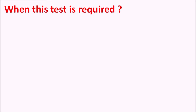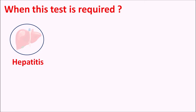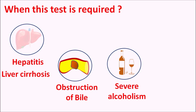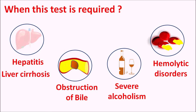Apart from jaundice, bilirubin levels can also be elevated in liver disorders such as hepatitis, where any inflammation of the liver results in excessive bilirubin levels, or liver cirrhosis. Similarly, obstruction of bile due to gallbladder disorders, severe alcoholism affecting the liver causing decreased catabolism, or hemolytic disorders causing breakdown of RBCs releasing hemoglobin and ultimately bilirubin — any of these conditions may elevate bilirubin levels, and the bilirubin test can be done to assess such abnormalities.